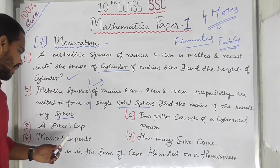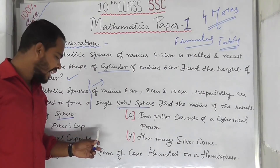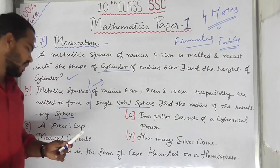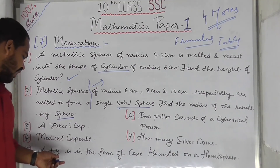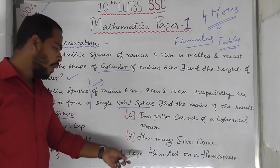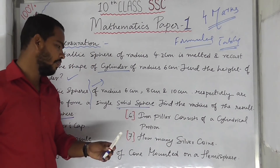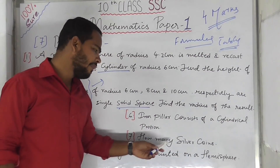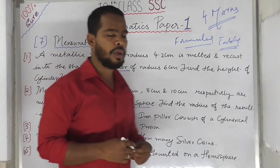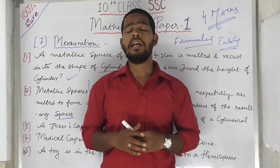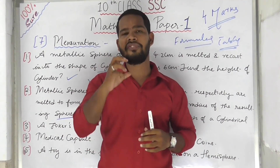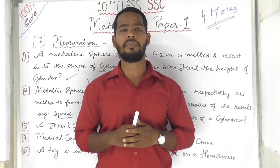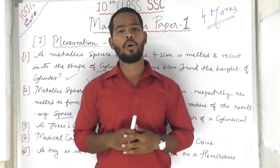Additional important mensuration questions include the joker's cap, medical capsule, toys in the form of a cone mounted on another shape, an iron pillar consisting of a cylindrical portion, how many silver coins, and more. You must learn all mensuration formulas. These are the chapter-wise important questions for 10th class SSC paper 1 mathematics.